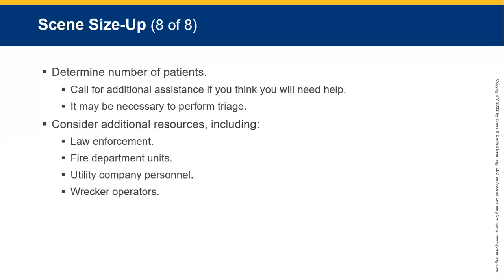Determine the number of patients injured. You may need to perform triage to sort out the order of treatment: P1 — critically injured patients with arterial bleeding; P2 — people who will survive if treatment is put off slightly; P3 — walking wounded who don't actually need urgent medical care; P4 — those who are dead, with positive signs of death such as decapitation, rigor mortis, decomposition, and lividity. You can use law enforcement, fire department, or whoever's on site to help control and manage the scene.